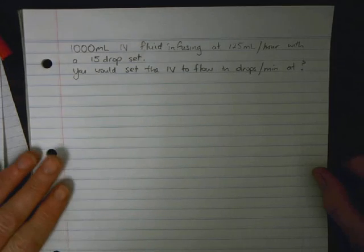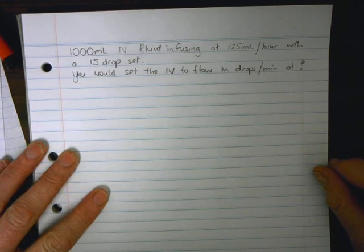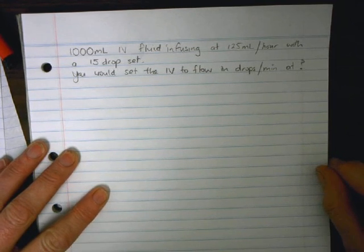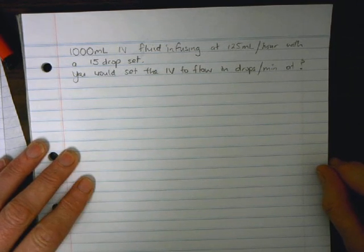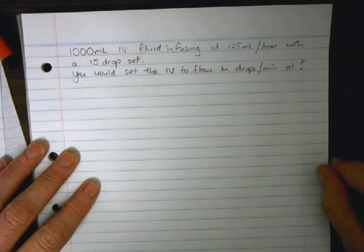I'm going to look at a slightly different problem now. In this case, the question is: 1000 mL of IV fluid is infusing at 125 mL per hour with a 15 drop set. You would set the IV to flow in drops per minute at what rate?